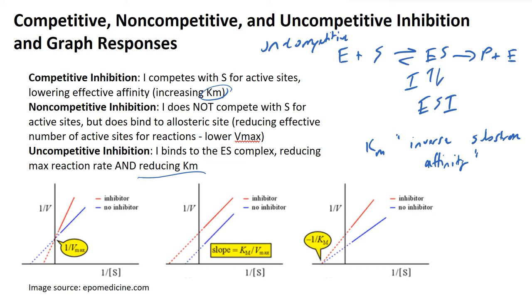Knowing this background, let's look at the Lineweaver-Burk plots. A key thing to note is that the Y-intercept is equivalent to 1 over Vmax. With competitive inhibition, we did not change Vmax — because even with a competitor present, if we flood our solution with substrate, we can negate the effects of the inhibitor entirely. Like a DDoS attack on a website, you can flood the system with more substrates to overpower the diminishing effects of the inhibitor.